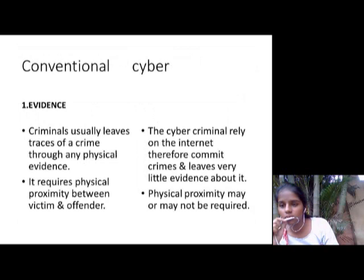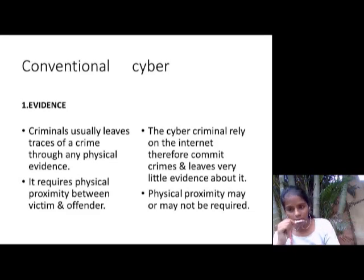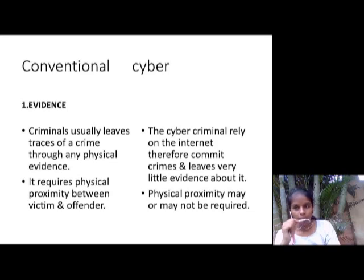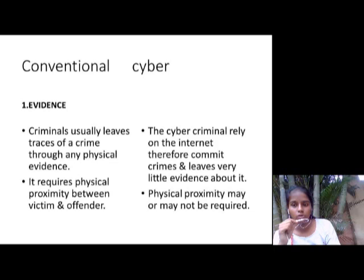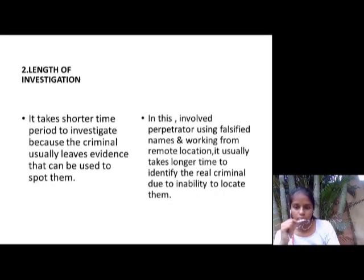The first difference is Evidence. In a conventional crime, criminals usually leave sources of a crime as physical evidence, and it requires physical proximity between victim and offender. But in cyber crime, they rely on the internet to commit crimes and leave very little trace, and physical proximity may or may not be required.